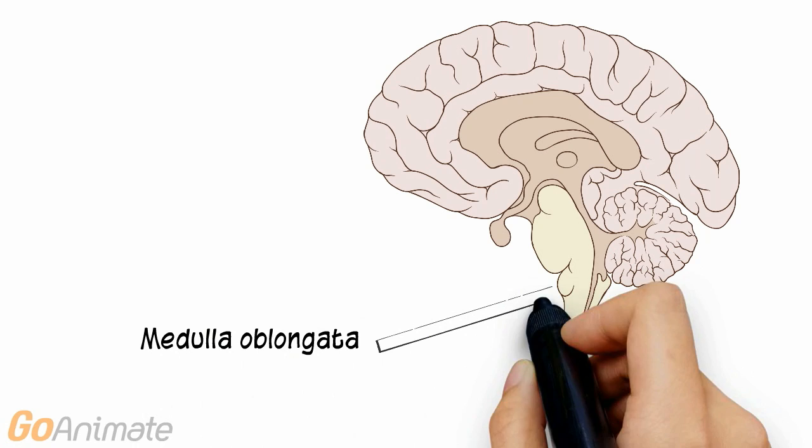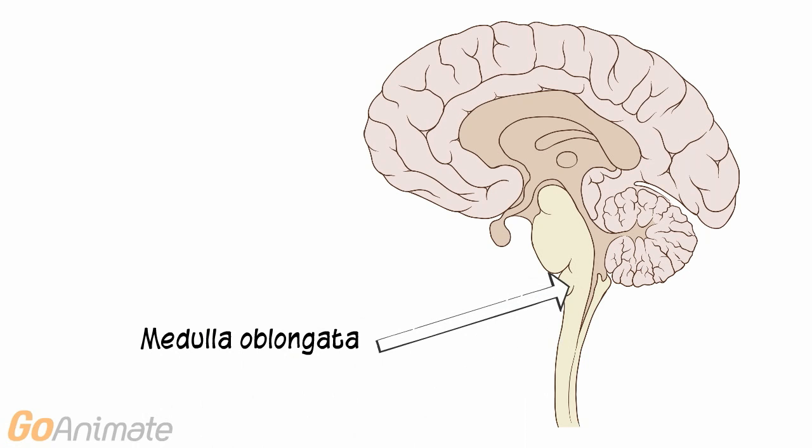The medulla oblongata helps to regulate heart rate, respiration, swallowing, vomiting and blood vessel diameter.